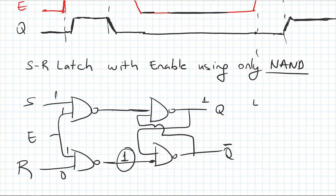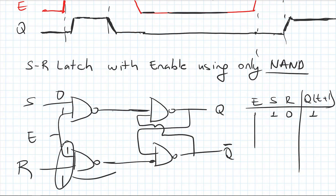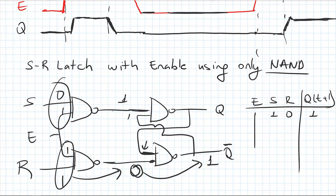Let's fill the functionality table. If enable=1 and S=1, R=0, then Q(t+1)=1. If S=0, R=1: one and one here gives zero, zero and one gives one — I don't need to trace further since I have a zero here, which gives one, and one and one gives zero. So with S=0, R=1 I get Q=0.